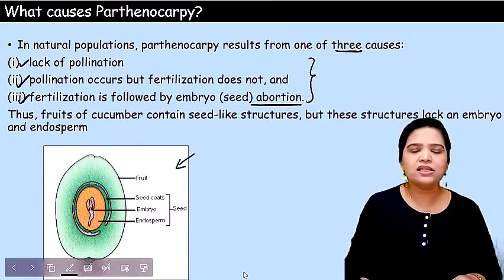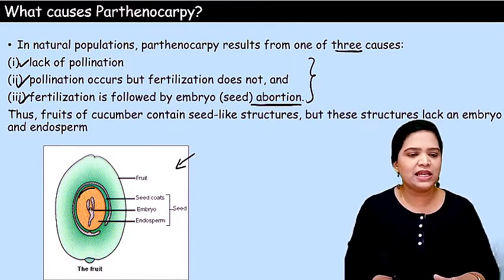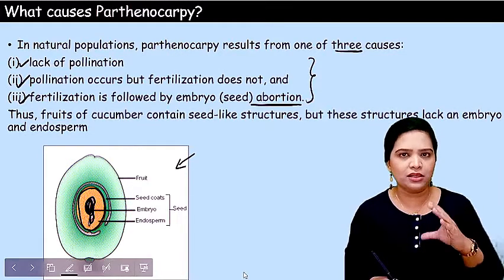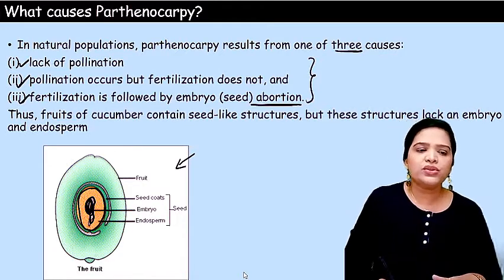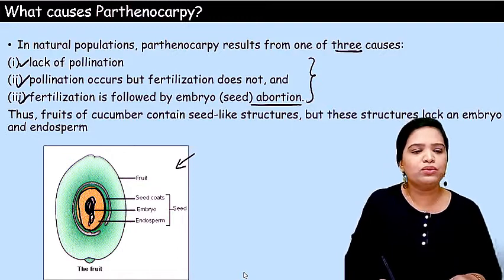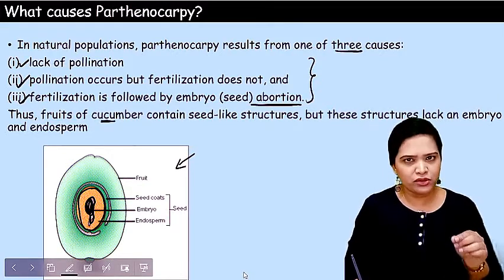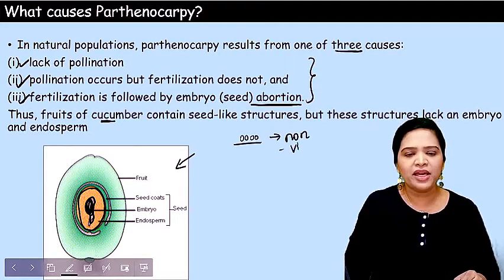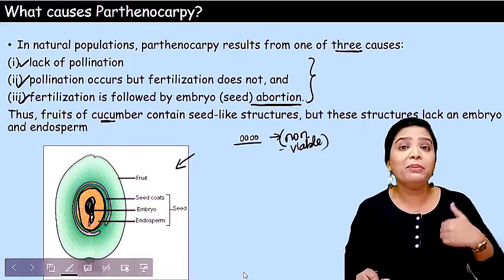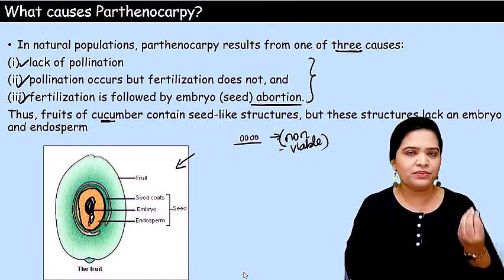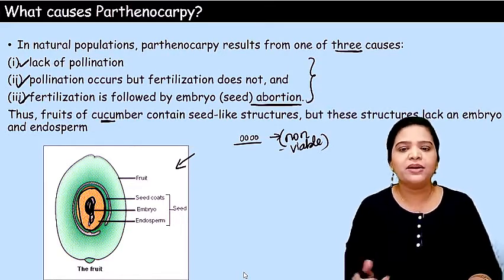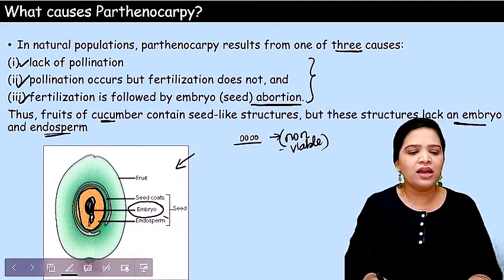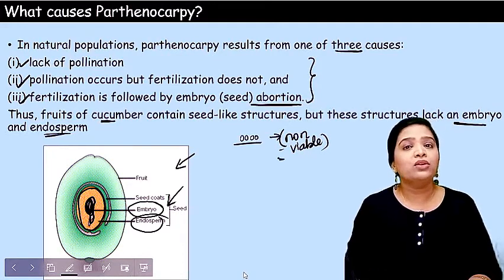In this picture, normally a fruit has a yellow-colored endosperm and a central embryo region. But some fruits produced through parthenocarpy — for example cucumber — may contain small seeds, but all those seeds are non-viable. They won't help in developing the progeny and won't have any mature embryo. They contain seed-like structures but lack embryo and endosperm.